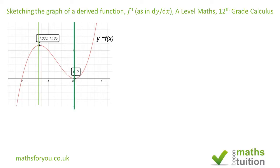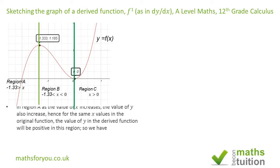We now have three distinct regions: Region A where x is less than -1.333, Region B where x is between -1.333 and 0, and Region C where x is greater than 0. In Region A, as x increases, y also increases — going from a negative value to a positive value, so y is actually increasing.